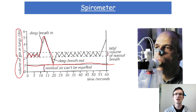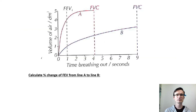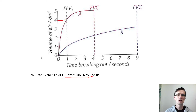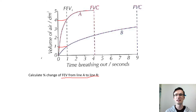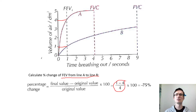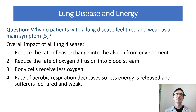Taking a deep breath in increases the volume further, and a deep breath out reduces it to that residual level. You might be given a graph question based on the spirometer trace, and you might be asked to calculate FEV. For example, to calculate percentage change in FEV from line A to line B: if line A is at 4 and line B is at 1, the change is 3, divided by the original value of 4, giving minus 75%.